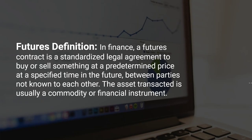First off, what are futures and what is the textbook definition? In finance, a futures contract is a standardized legal agreement to buy or sell something at a predetermined price at a specific time in the future between parties that don't know each other. This is where the centralized exchange comes in — it matches buyers and sellers. These assets are usually a commodity or financial instrument. A commodity is something like corn, sugar, or pork bellies, and a financial instrument would be like the euro, the S&P 500, the Dow, or Nasdaq.